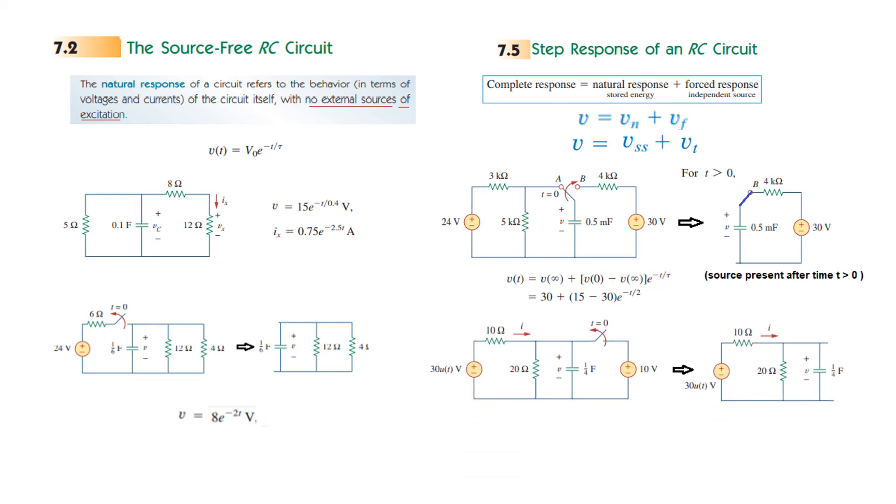Another example: here also you can see there are two sources, but at T greater than 0 this will be open. So only this portion is left. But this also has a source present after T greater than 0, and therefore this answer will also be written in this complete response form. So the answer will be the V final or VSS and the transient response.